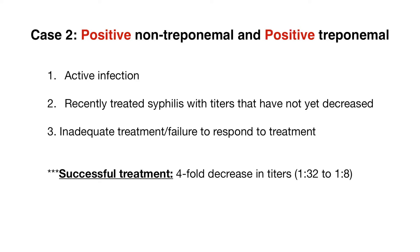Case number two: using the traditional screen, we started with a non-treponemal test that was positive, which reflexes to a treponemal test that also turned out positive. This can indicate active infection. It's also possible the patient was recently treated and titers have not yet decreased — the treponemal test usually remains positive for life while non-treponemal titers decrease over time. Another possibility is that the patient had syphilis but did not receive adequate treatment. Successful treatment is defined as a four-fold decrease in titers, such as going from 1:32 to 1:8.